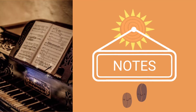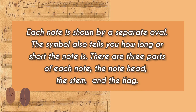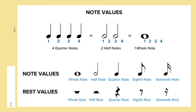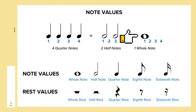Note. Each note is shown by a separate oval, and the symbol also tells you how long or short the note is. There are three parts of each note: the note head, the stem, and the flag. The note head indicates what note to play and its duration. The stem can point up above the middle line or down below the middle line, making the notes easier to read. The flag always sits on the right of the stem and also indicates duration. Whether a note head is filled or open shows the note's value, or how long that note should be held. A closed note head with a stem is our quarter note and gets one beat. An open note head with a stem is a half note and gets two beats. An open note that looks like an O without a stem is a whole note and it gets held for four beats.